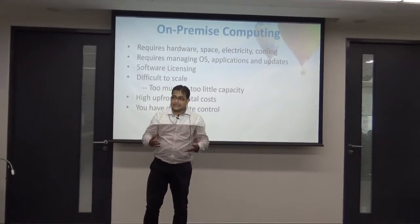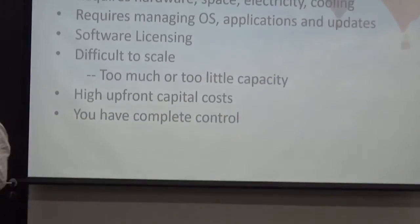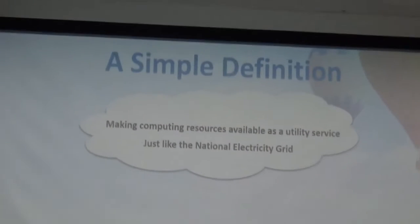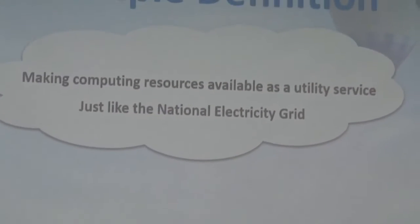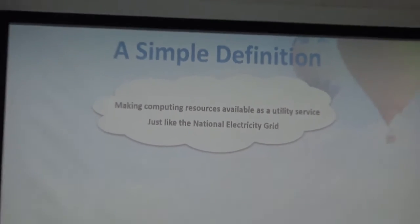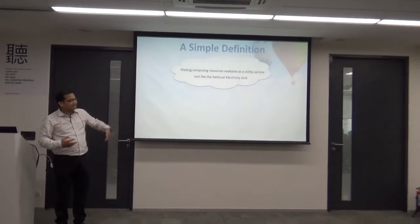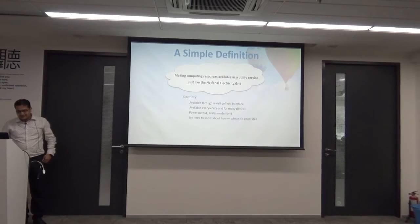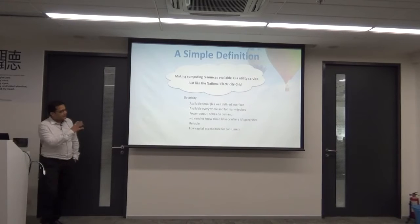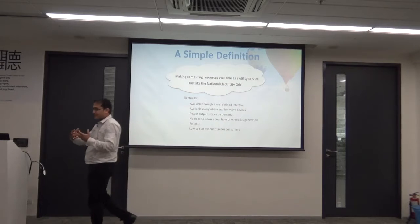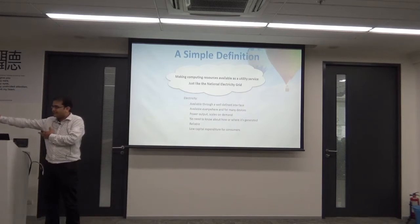That is called on-premise computing. As a comparison to this, a new concept came called cloud computing. In very simple words, cloud computing is making computing resources available on the fly over the internet. I have given an example here — it is just like a national electricity grid. Just like electricity is available through a well-defined interface, cloud computing is also available through a well-defined interface.